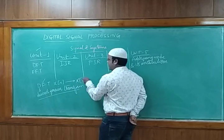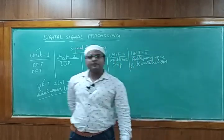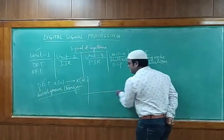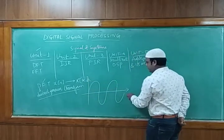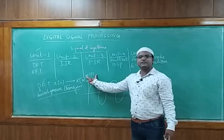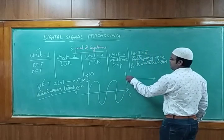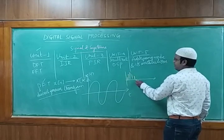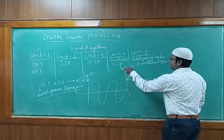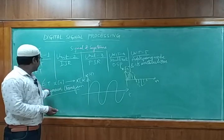Signals can be of two types: one is analog and the second is digital. An analog signal is continuous in time — for example, a sinusoidal signal X of T that keeps repeating for every duration of time is a continuous signal. When we have impulses at every particular interval of time that keep changing, that is a discrete signal represented as X of N. In DFT we learn how to convert this signal X of N into X of K.